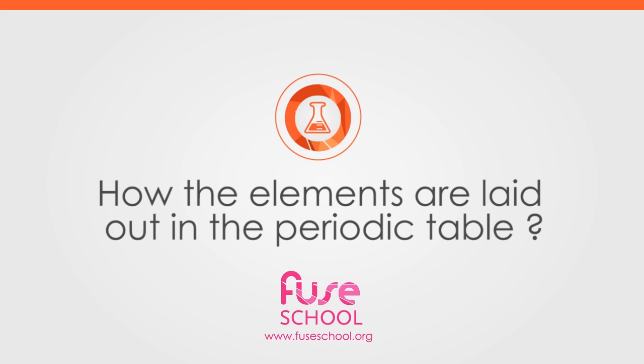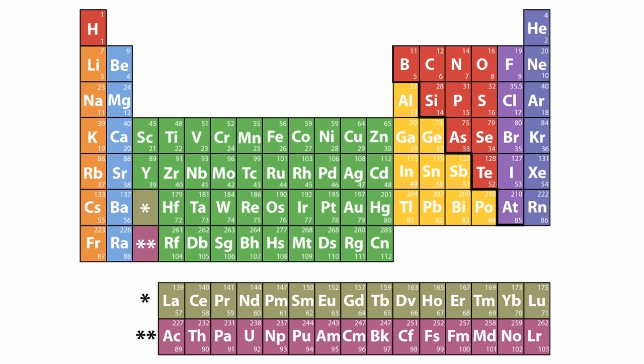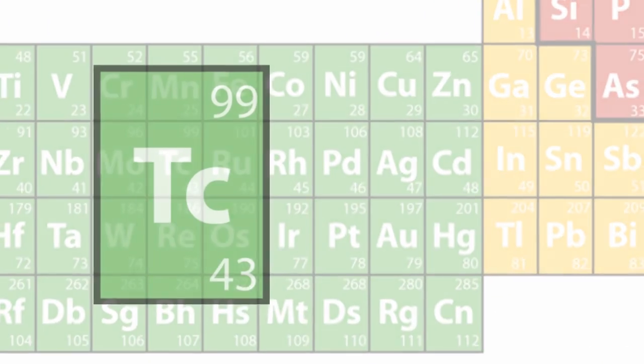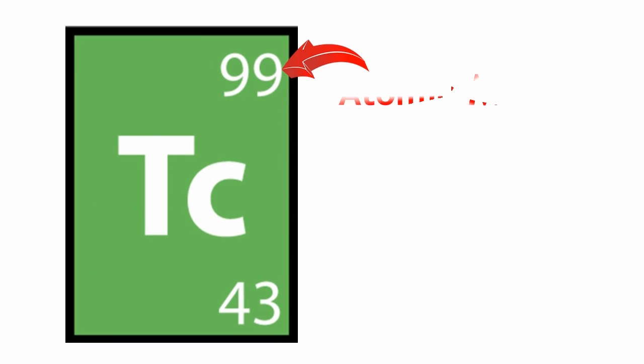The modern periodic table is based on Mendeleev's arrangement, but instead of being arranged by atomic mass as Mendeleev's was, it is arranged by elements' atomic number.